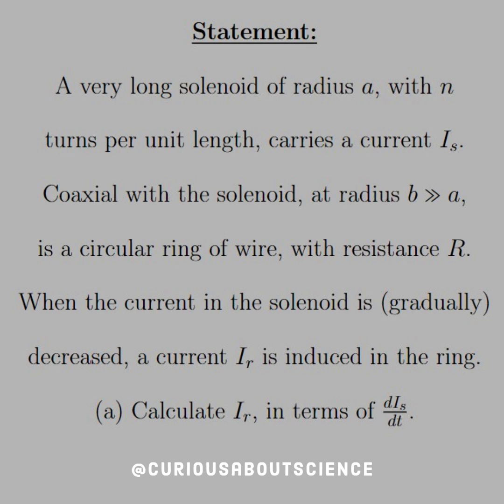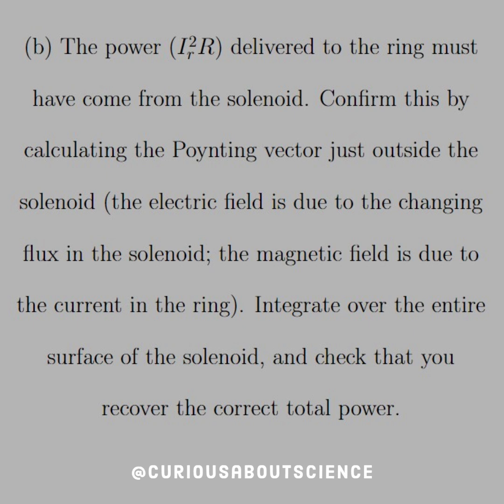Calculate IR in terms of dIS/dt. Part B: the power IR squared R delivered to the ring must have come from the solenoid. Confirm this by calculating the Poynting vector just outside the solenoid. The electric field is due to the changing flux in the solenoid. The magnetic field is due to the current in the ring. Integrate over the entire surface of the solenoid and check that you recover the correct total power.